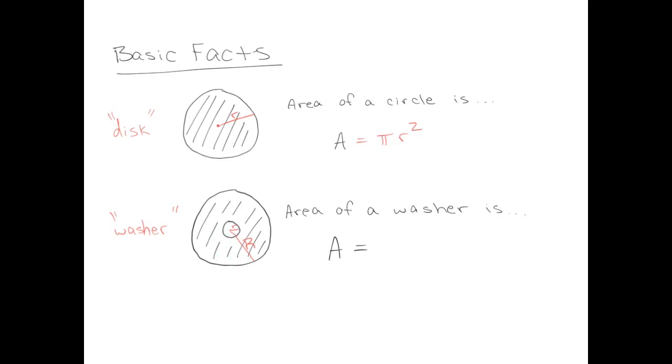See if you can take a few minutes and figure out what is the area formula for a washer on your own. The answer is that I take the area of the whole big circle, which is pi big R squared, and I subtract off the area of the hole, pi little r squared. So the area of a washer is pi big R squared minus pi little r squared.